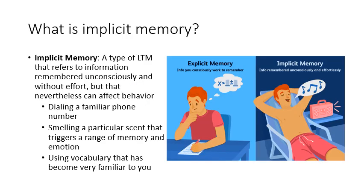Implicit memory is a type of long-term memory that refers to information we remember unconsciously and without effort, but that can nevertheless affect behavior. For example, dialing a familiar phone number — we might do it without even looking, certainly without thinking. Or if you smell a particular scent that triggers a range of memory and emotion, it might motivate you to go buy that popcorn. That's implicit memory.